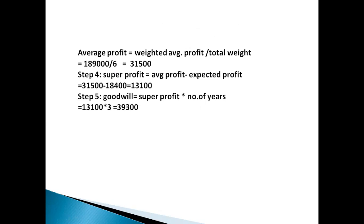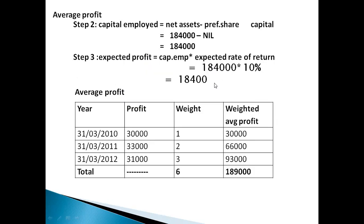The next step is super profit. Step 4: super profit is equal to average profit minus expected profit. Average profit is 31,500. Expected profit from step number 3 is 18,400.